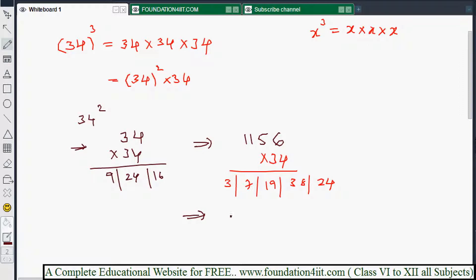If you apply balancing rule, 4, 0, 3, 9, and 3, we will get this. So 39,304 is the cube of 34. This value is 39,304.